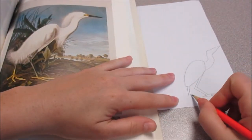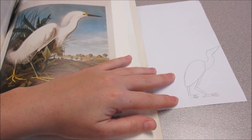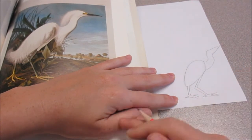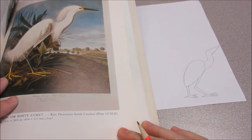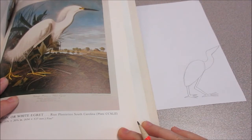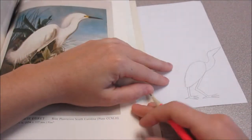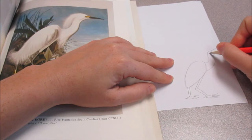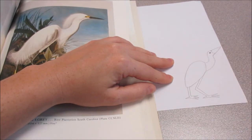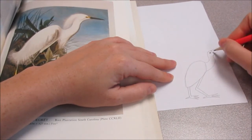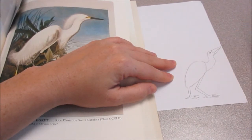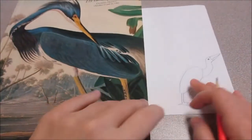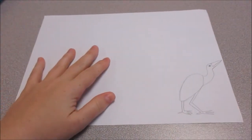Same thing on this foot. One, two, three. And then one going back. Okay, I'm gonna finish off his beak here. Add nine. Got my little egret in the corner of my page.